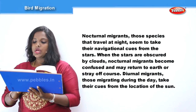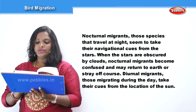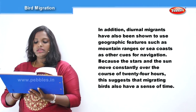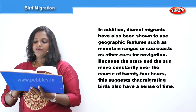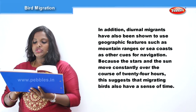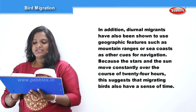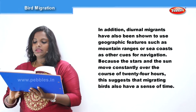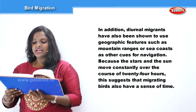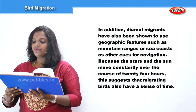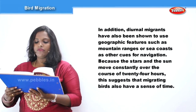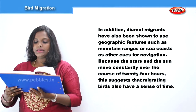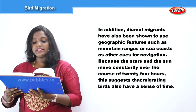Diurnal migrants, those migrating during the day, take their cues from the location of the sun. In addition, diurnal migrants have also been shown to use geographic features such as mountain ranges or sea coasts as other cues for navigation. Because the stars and the sun move constantly over the course of 24 hours, this suggests that migrating birds also have a sense of time.